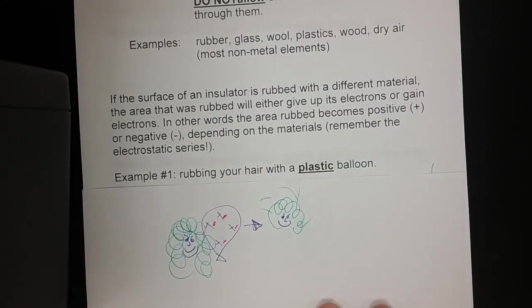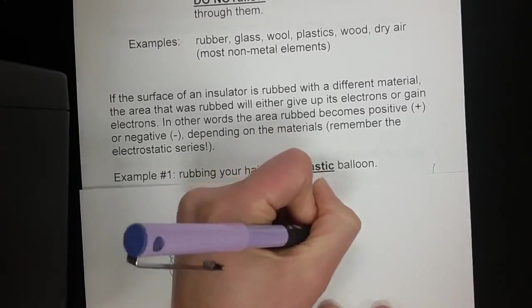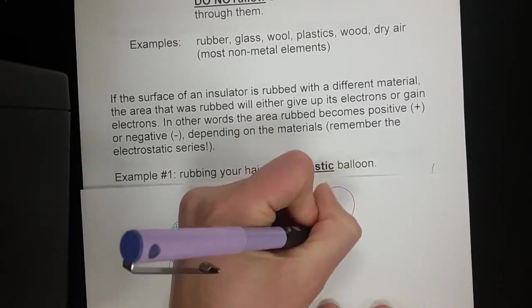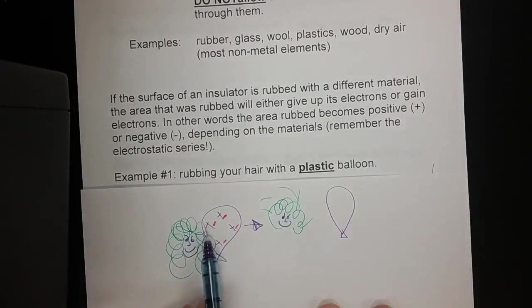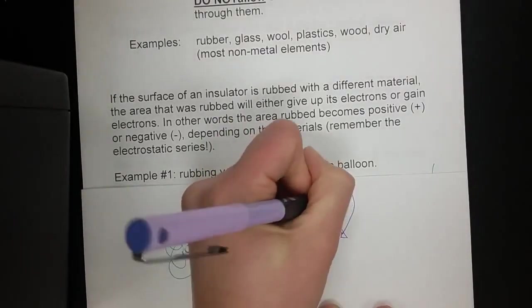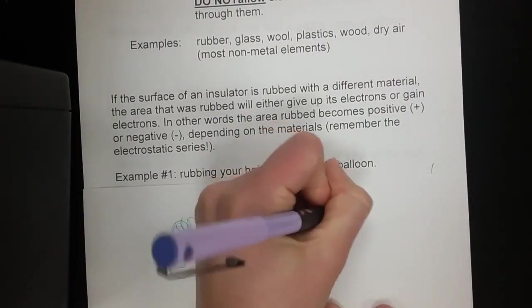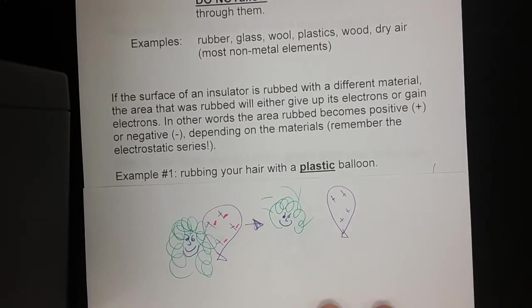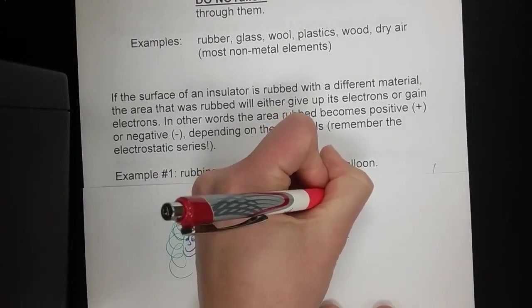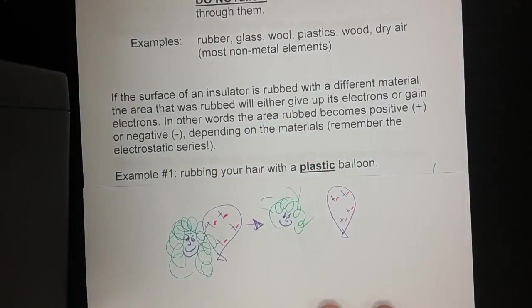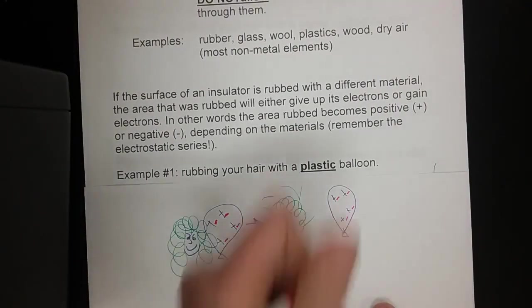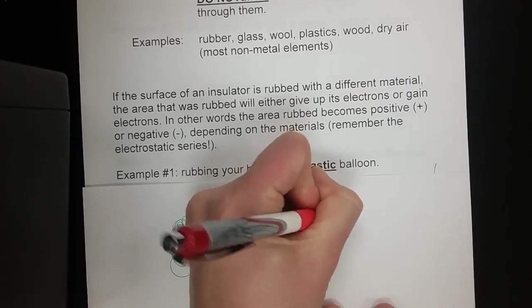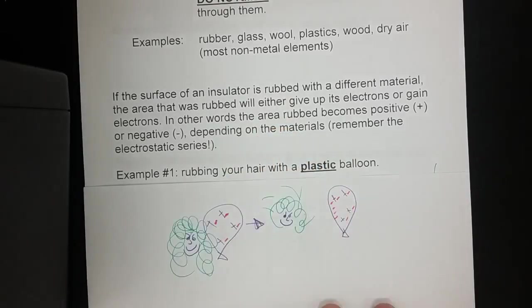When the balloon pulls away, it still has its 1, 2, 3, 4 positive charges and its 1, 2, 3, 4 negatives. But now it's attracted some of the negatives that were in your hair, and they've transferred onto the balloon.